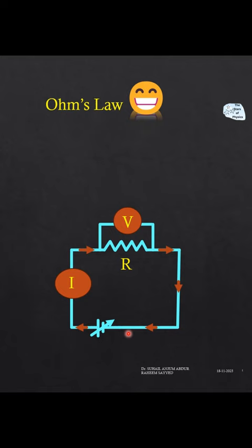The current meter, capital I, is connected in series with the resistance and the voltage meter is connected across, that is parallel to, the resistance.